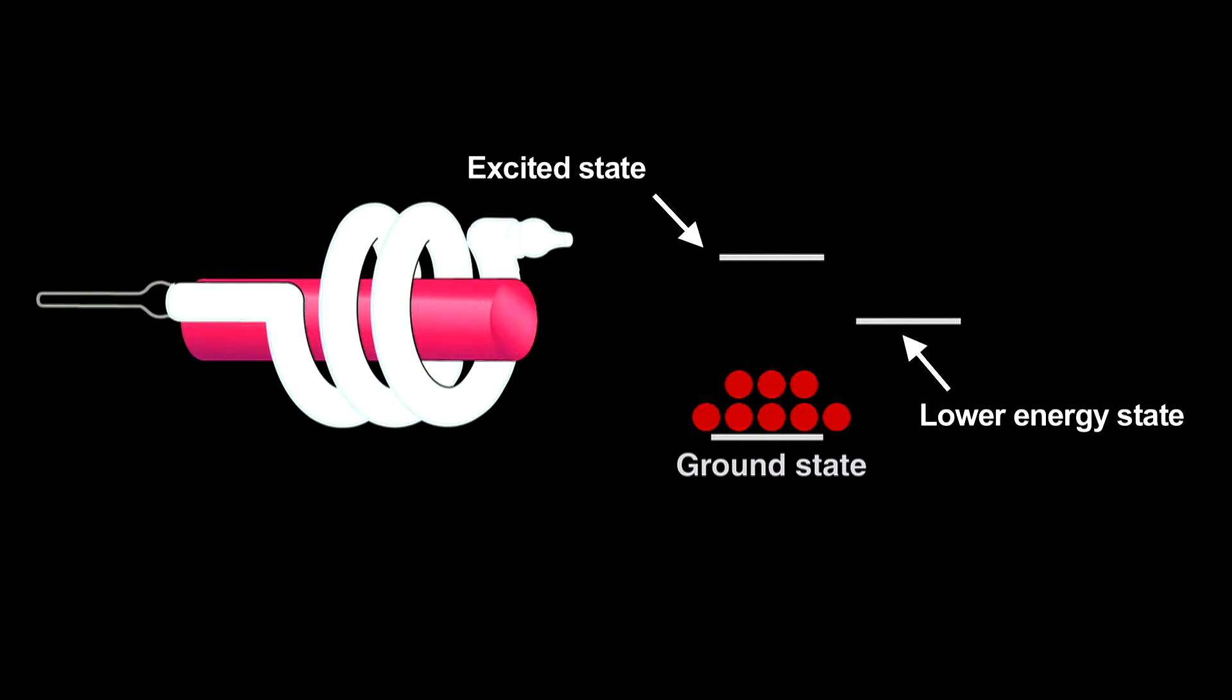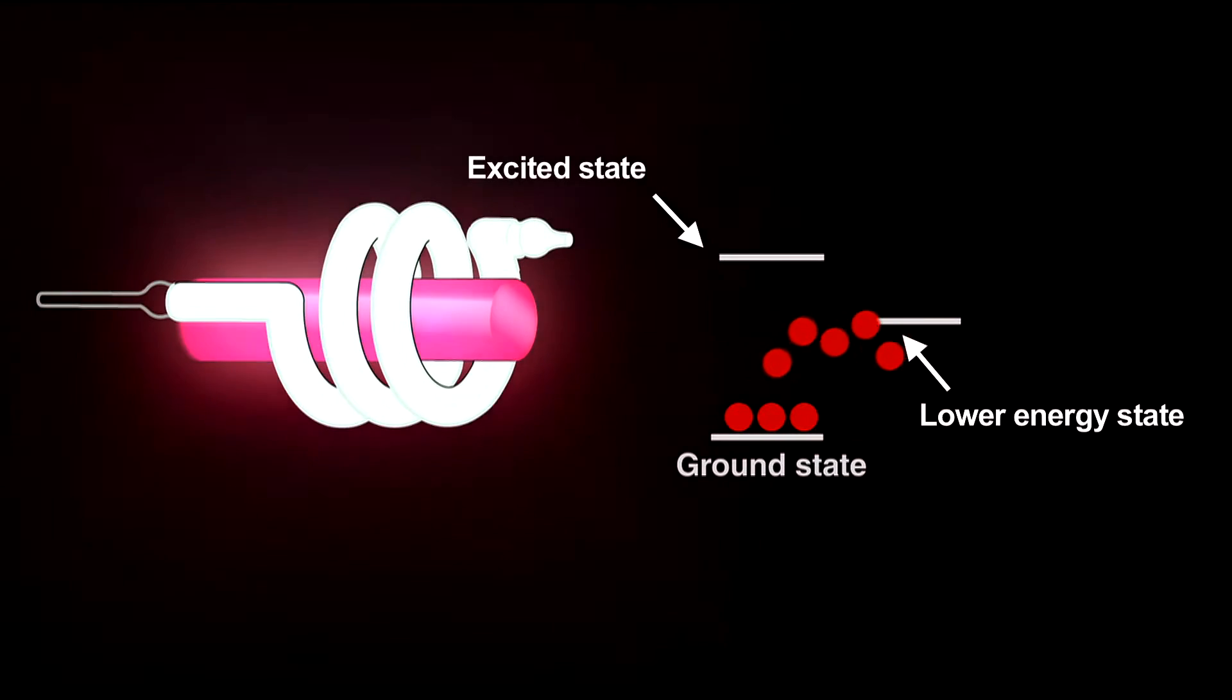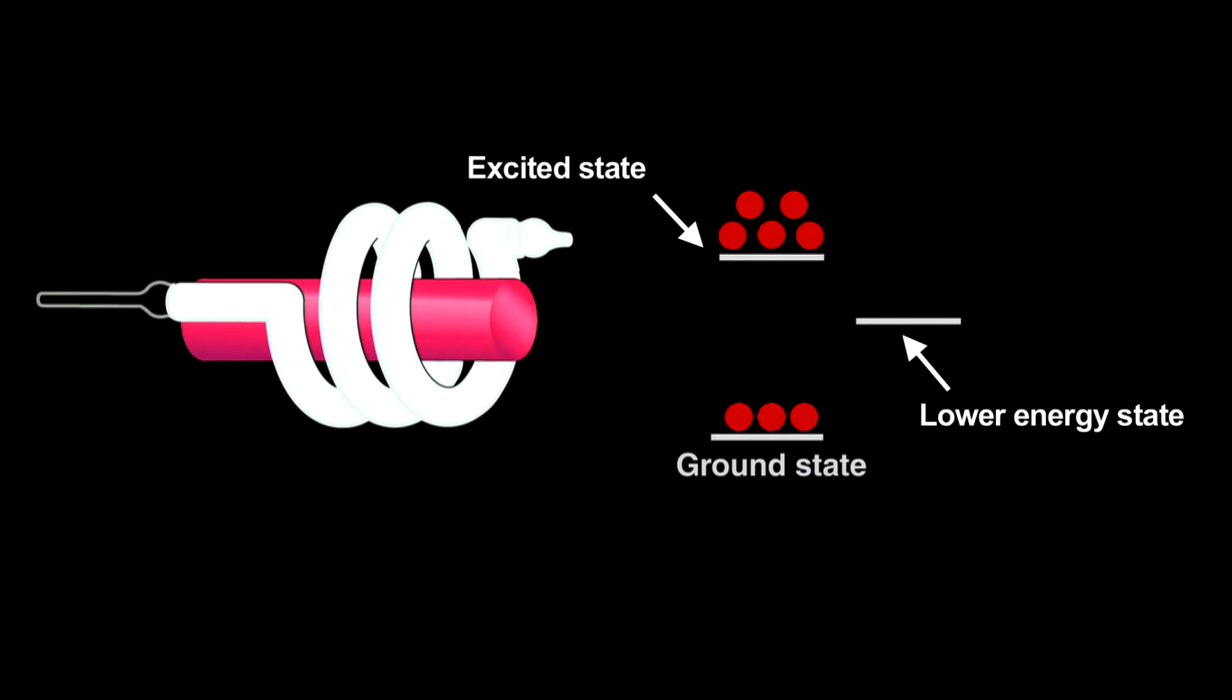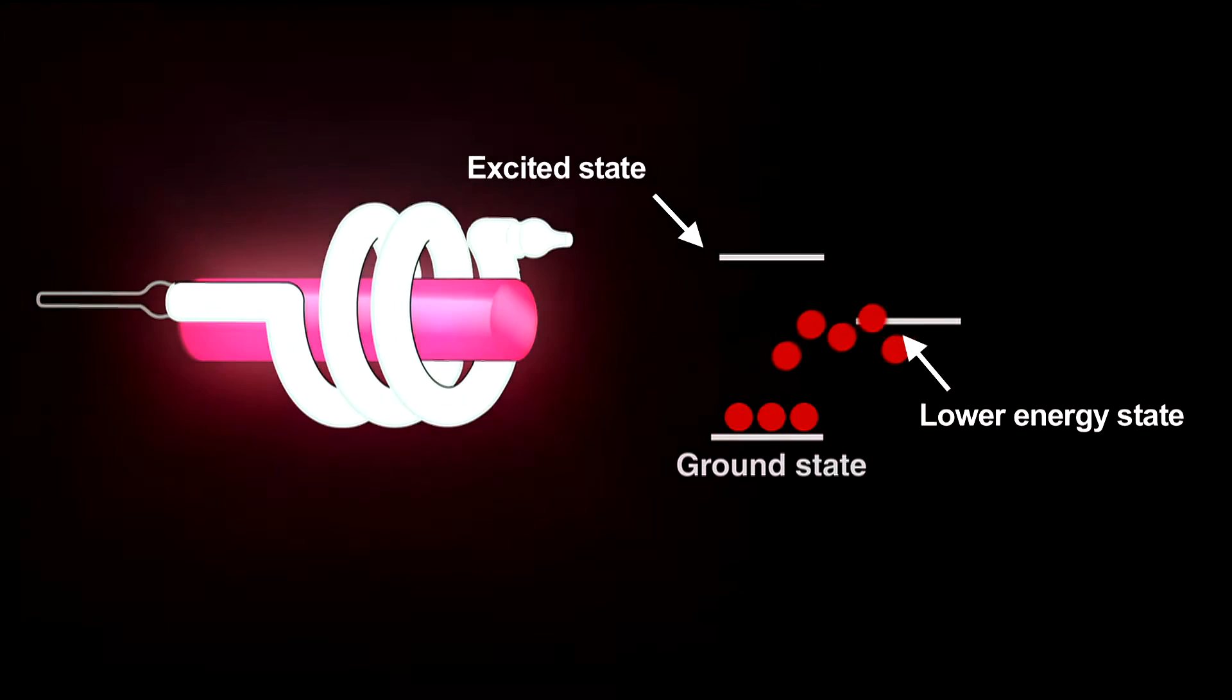To create a laser takes an extremely powerful lamp. In the ruby laser, repeated flashes, called pumping, make something amazing happen. They supply so much energy that a population inversion occurs. Here, more electrons in the energy level just above the ground state than in the ground state.